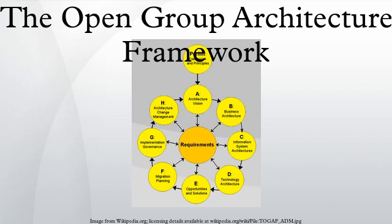In December 2001, TOGAF 7, the technical edition, was published. TOGAF 8 was first published in December 2002 and republished in updated form as TOGAF 8.1 in December 2003. Around 2005, TOGAF became a registered trademark of the Open Group. In November 2006, the Open Group released TOGAF 8.1.1. As of February 2011, over 15,000 individuals are TOGAF certified, and as of September 2012 the official register has over 20,000 certified individuals. The latest version is TOGAF 9.1, launched on December 1, 2011.